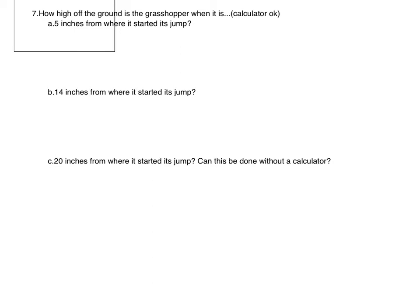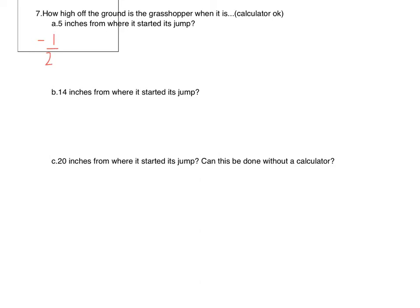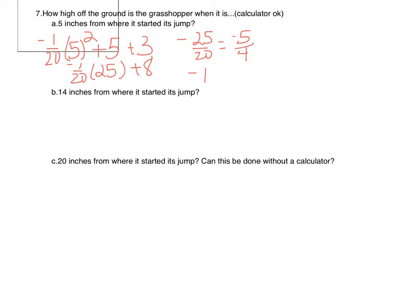How high off the ground is the grasshopper at various distances? We can use a calculator. When the grasshopper is 5 inches from where he started, plug in x equals 5: negative 1/20 times 5 squared plus 5 plus 3 equals negative 1/20 times 25 plus 8, which is negative 1.25 plus 8, giving 6.75 inches. So when the grasshopper is 5 inches from his starting point, he is 6.75 inches above the ground.